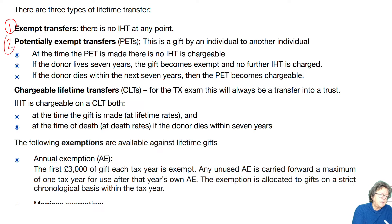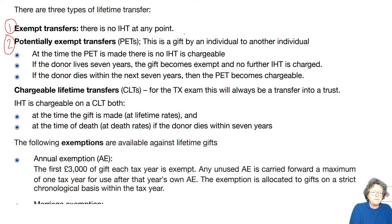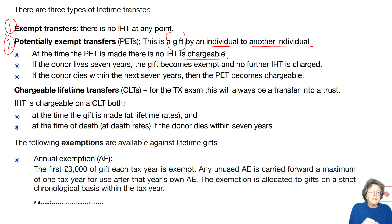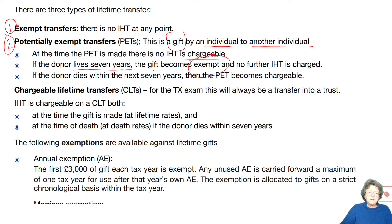The second one is a potentially exempt transfer — so it's not exempt yet, but potentially it could be. It is a gift from individual to another individual. At the time, it's treated as though it was exempt, and there's no IHT chargeable. If you live for seven years from the date of the gift, it becomes exempt. If you die within seven years, it becomes chargeable — and that's why it's only potentially exempt. Basically, you've got to live for seven years.